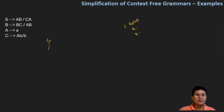So let's take an example. S produces A, B. We are taking another one: S produces CA. After that, A is the terminal symbol — small 'a' range. And B is a symbol, so we can either do BC, or AB.